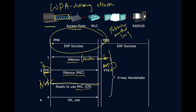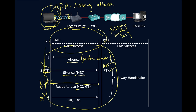Last but not least, the client sends an acknowledgement saying it received everything and is ready to use these keys. Now, at any point, if this client leaves this cell and moves to another access point, this process has to complete again — the ANONCE, SNONCE, MIC, and Group Transient Key all have to change. Not necessarily the EAP process, because that's about authentication to the RADIUS server. If we've already done that and we're just moving to a different cell or access point within the same wireless LAN controller, we only repeat the WPA part.